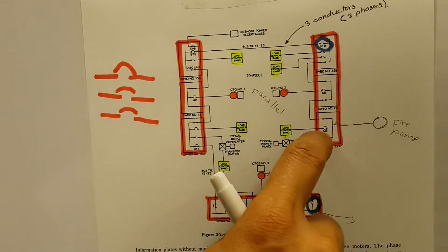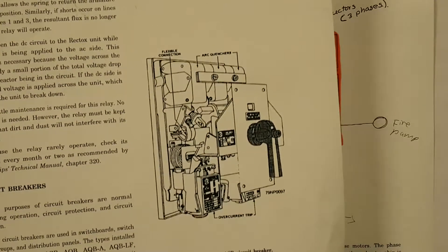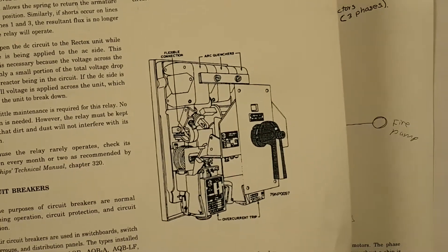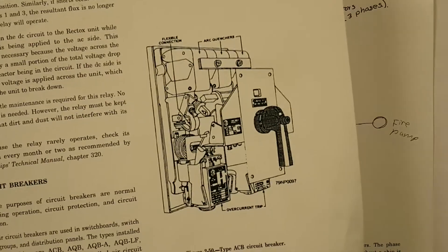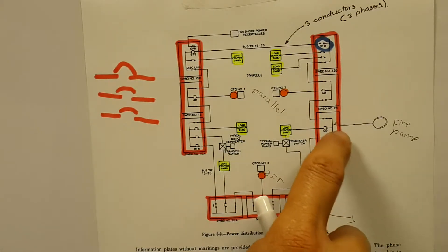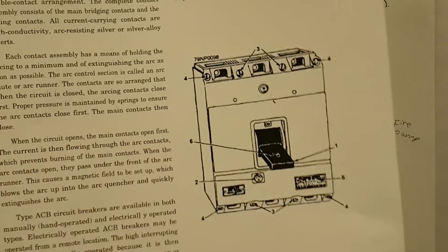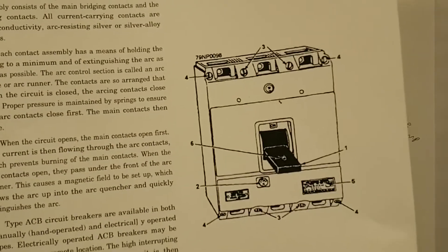Generator breakers and bus tie breakers tend to be pretty large, and this is kind of like what they look like. I will show you later on how the one in my ship looks like. Now loads from fire pumps are smaller breakers, this is what I call a medium-size breaker.